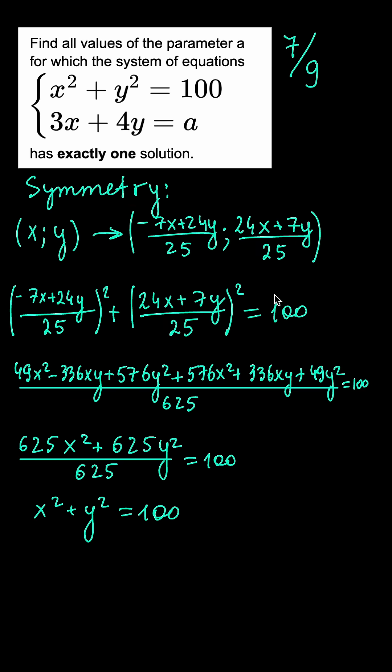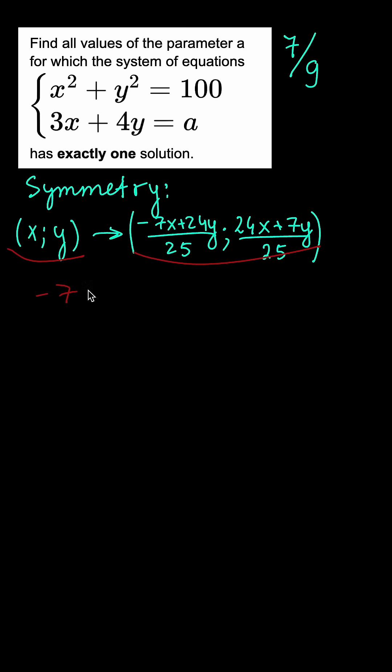Therefore, the system has a unique solution precisely when the two mirror solutions coincide, which means that minus 7x plus 24y over 25 is equal to x. Now if we solve that equation for y, we're gonna have y equals 4 over 3x.